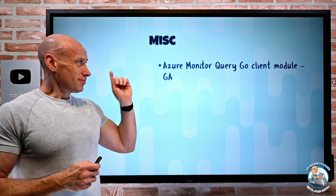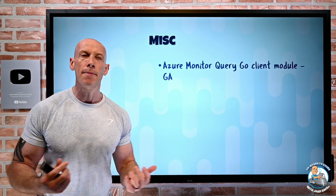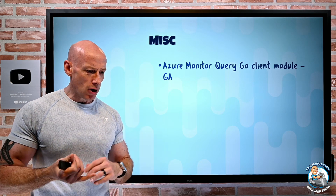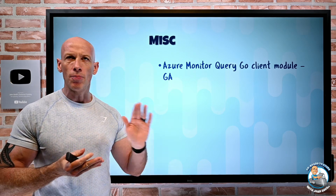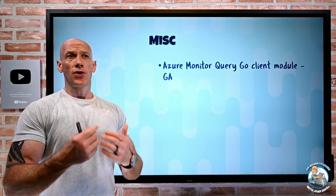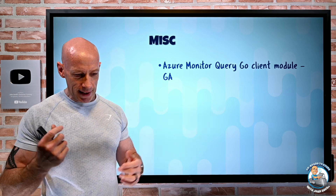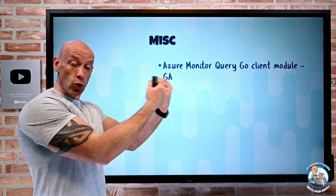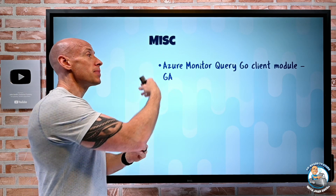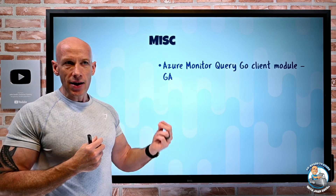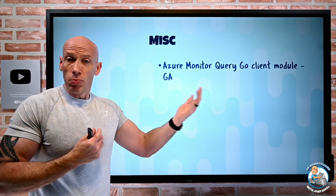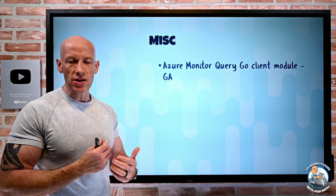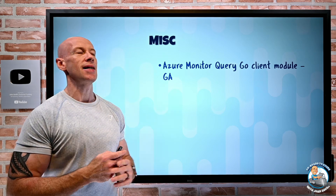For Azure Monitor queries, there are a bunch of client libraries that make it easy to do read-only operations against Azure Monitor. There are libraries for .NET, Java, JavaScript, Python, and now Go as well. If Go is my go-to programming language — pun intended — I can just do a go-get for the AZ query module. I also need AZ identity to authenticate to Azure, then I can just import them, do an authentication, execute the queries, and use those results in whatever way I want. It's very easy to integrate with that now.